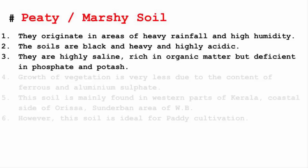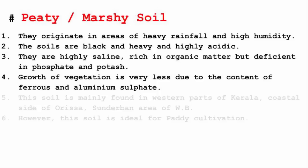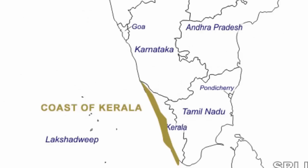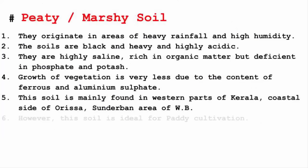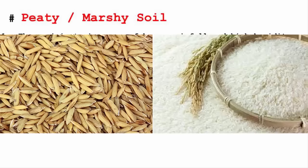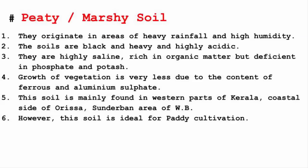Due to the content of ferrous and aluminium sulphate, the growth of vegetation is very limited. This soil is mainly found in the western parts of Kerala, the coastal side of Odisha, and the Sundarbans area of West Bengal — all areas next to the Bay of Bengal or Arabian Sea, which explains the high salinity. Finally, this soil is ideal for paddy cultivation. Paddy is the unprocessed form of rice — the entire portion with the husk — also called rough rice or mota chawal in Hindi.